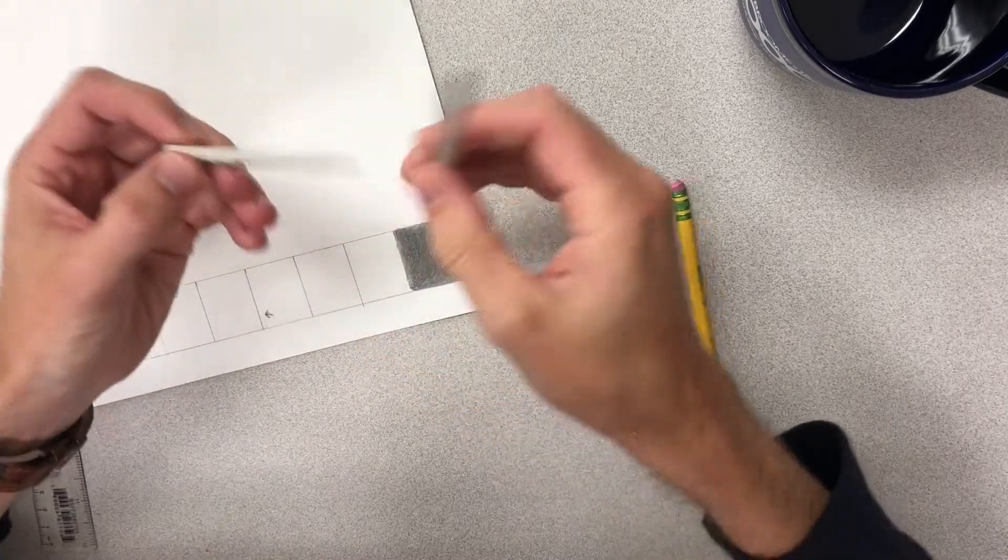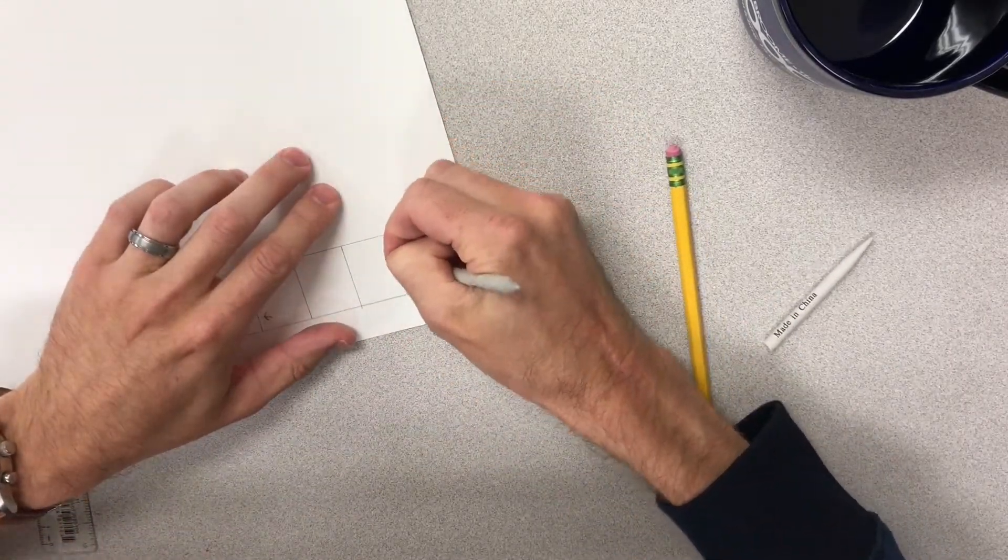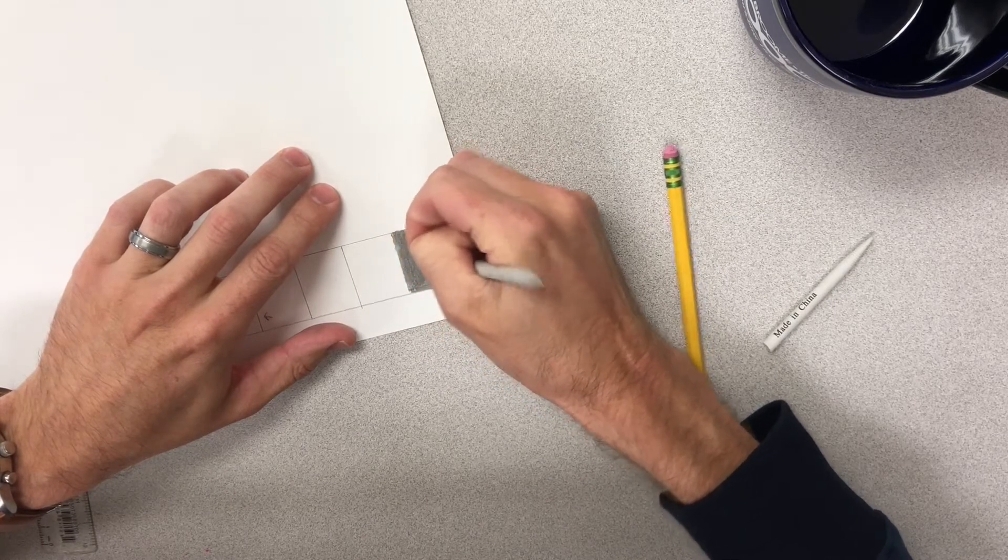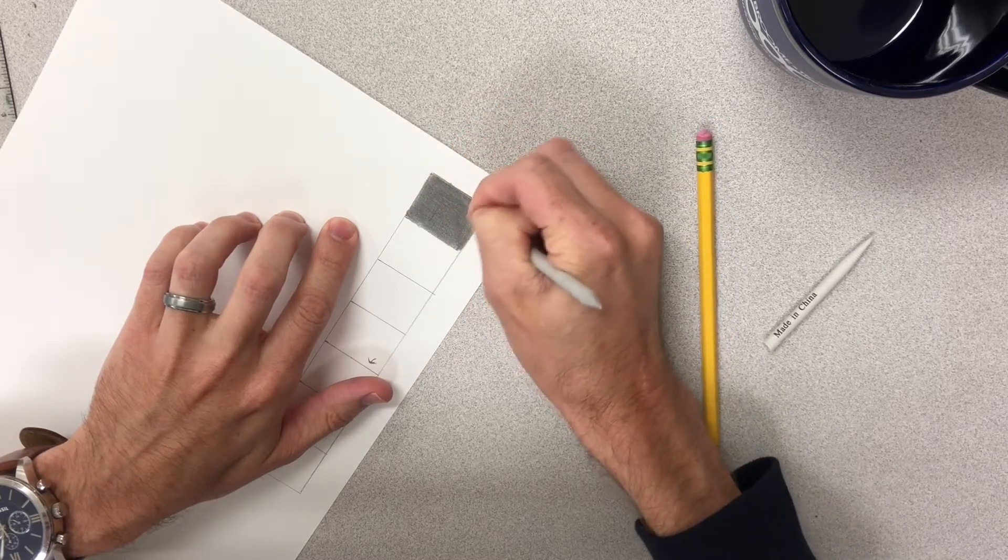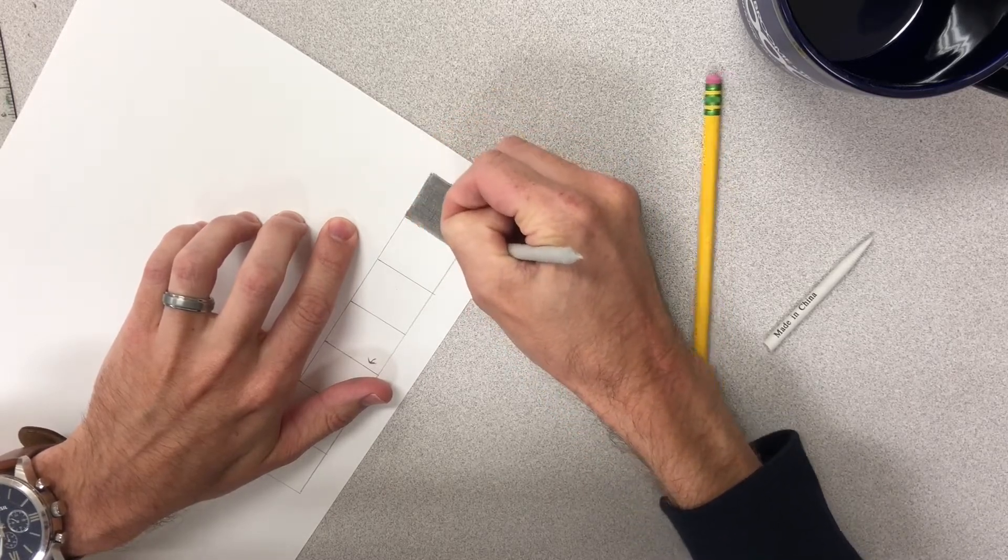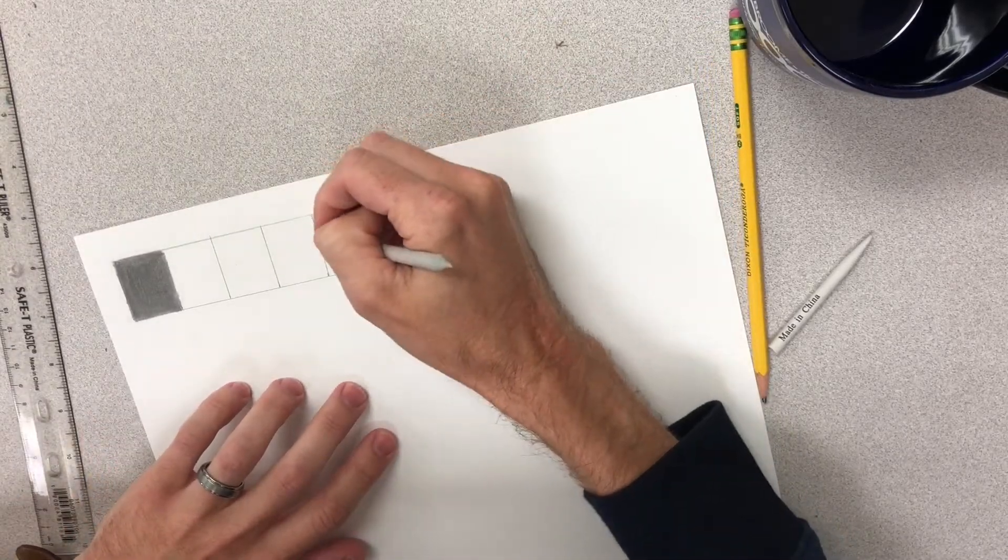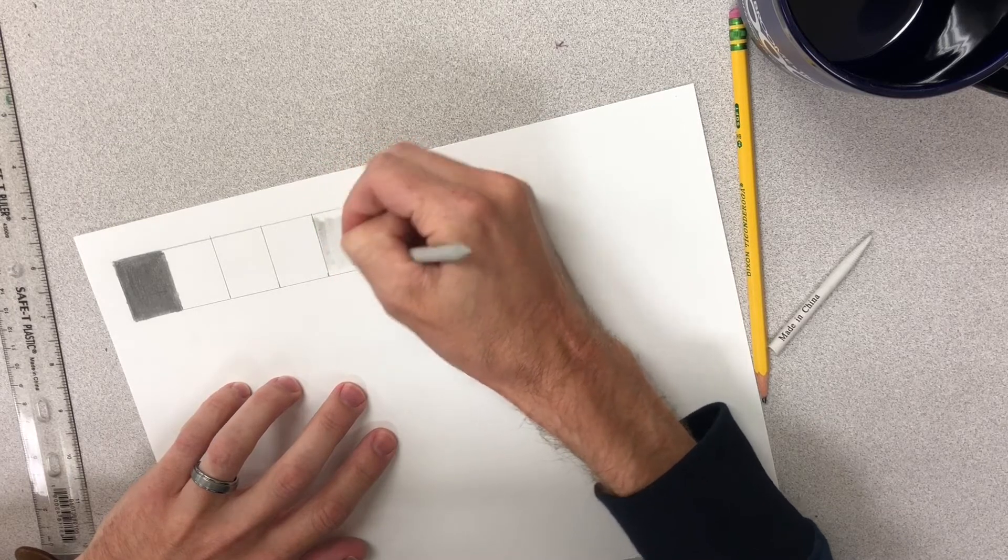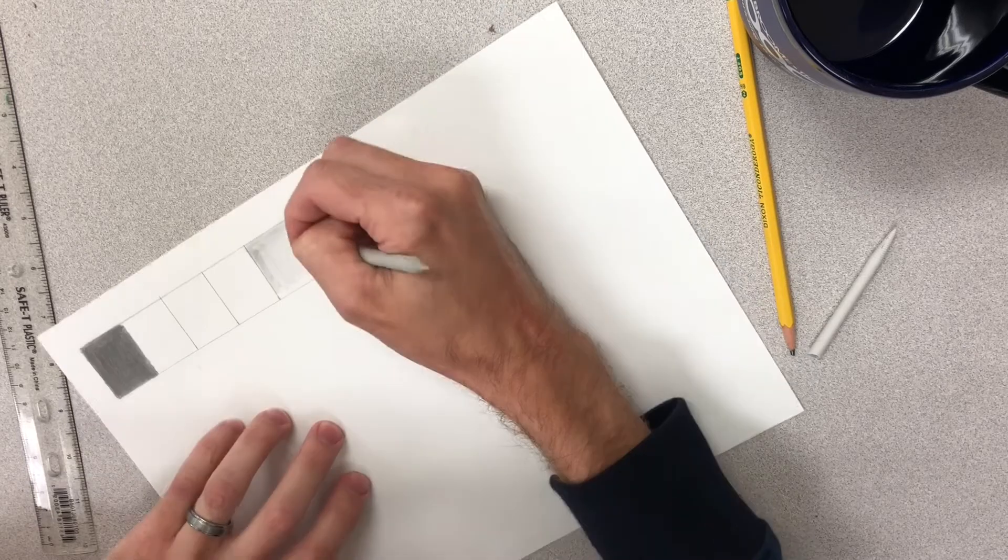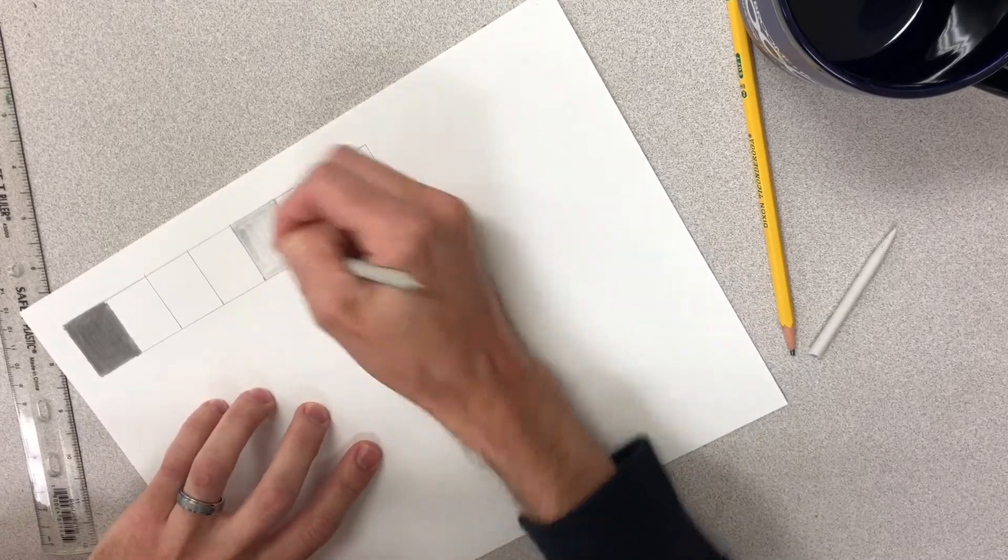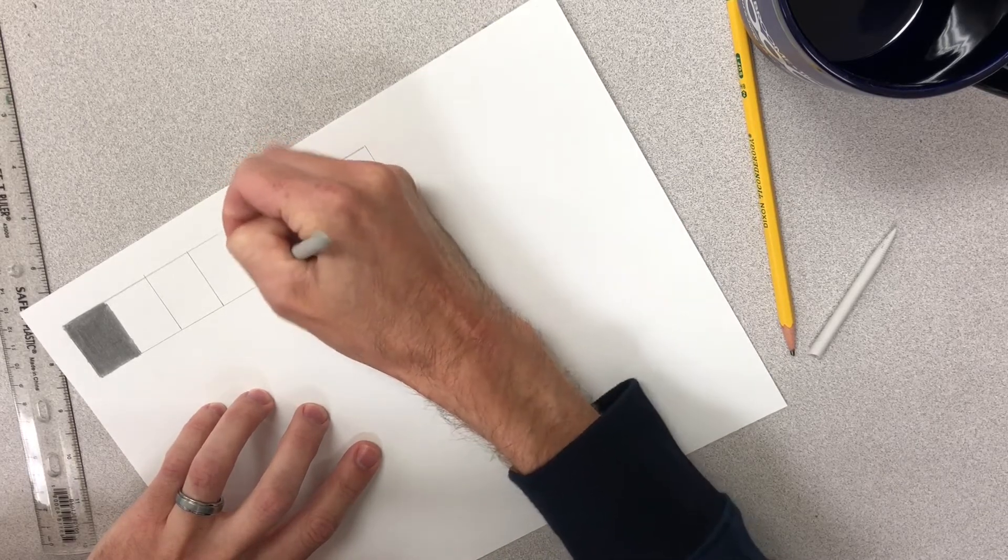And then I'm going to be using tortillon and blending stumps. You can use either of these. Just using this to get a nice clean finish, get rid of all the paper texture, smooth things out. This is also going to pick up some of the lead for me. I'm actually going to be using this lead that I picked from here to do another shade.